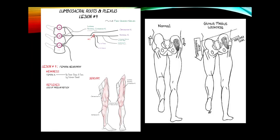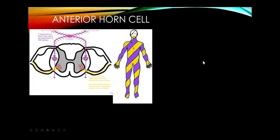Weakness of the gluteus medius — a strong L5 muscle — is something else to look for in L5 radiculopathy. Loss of stabilizing effect causes a contralateral hip drop when watching the patient walk.